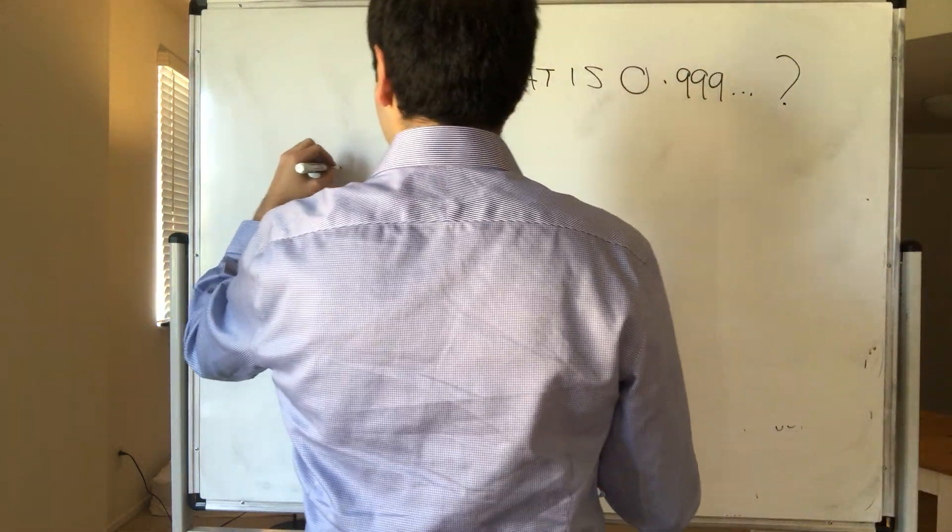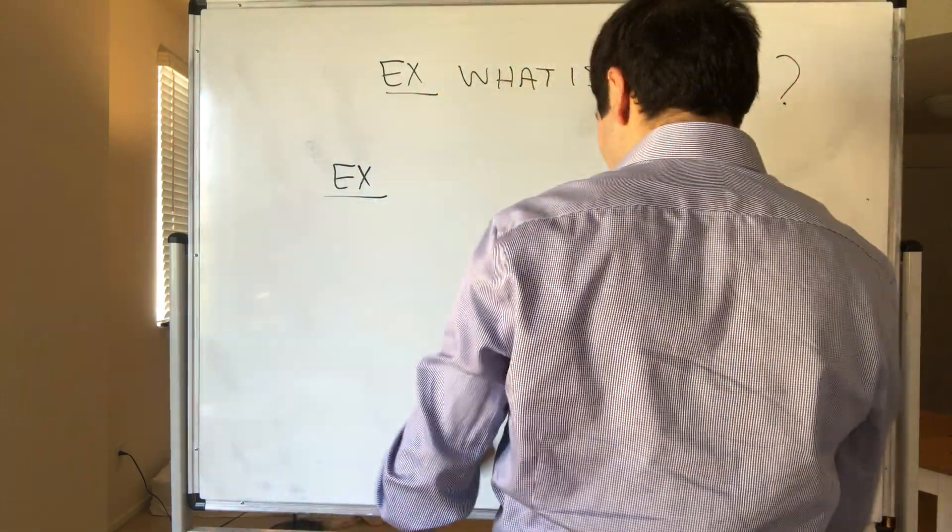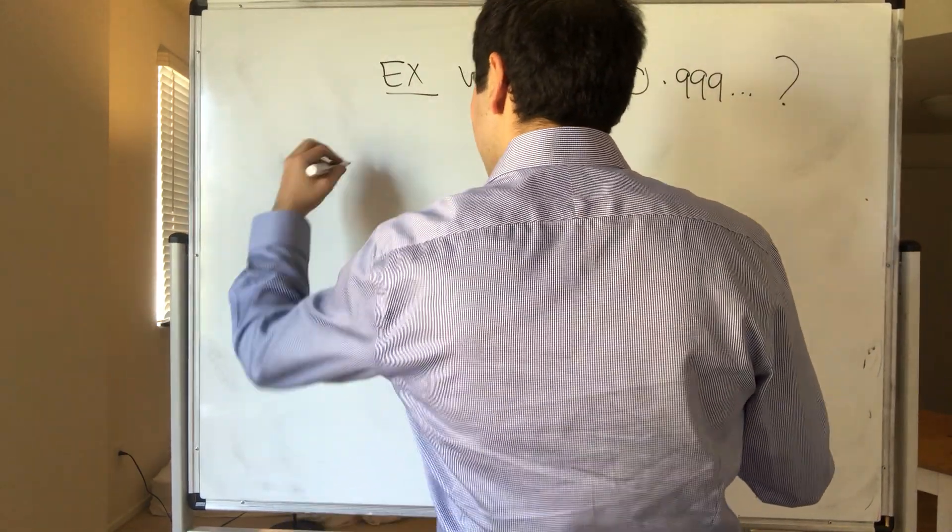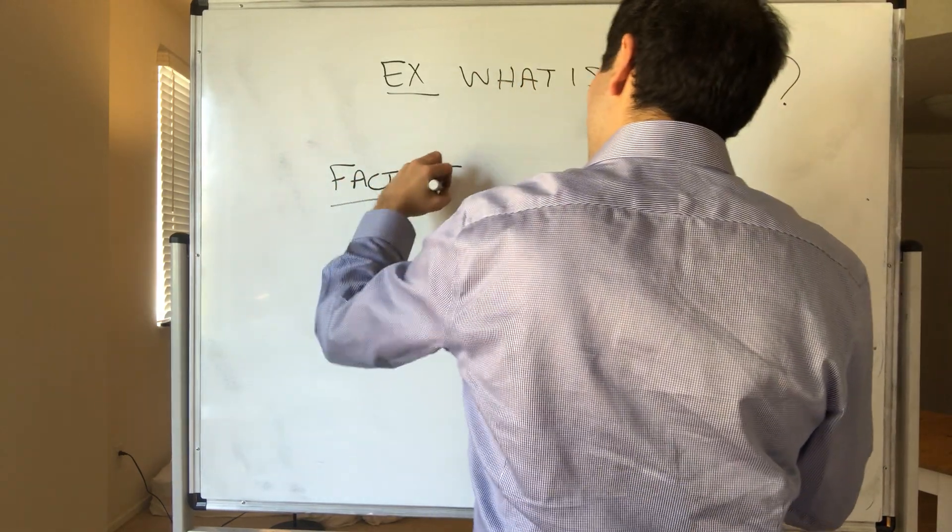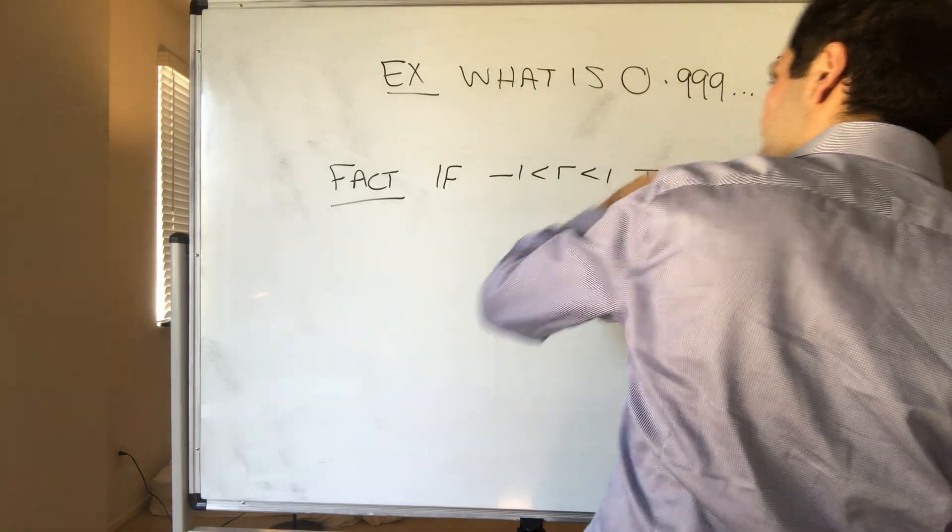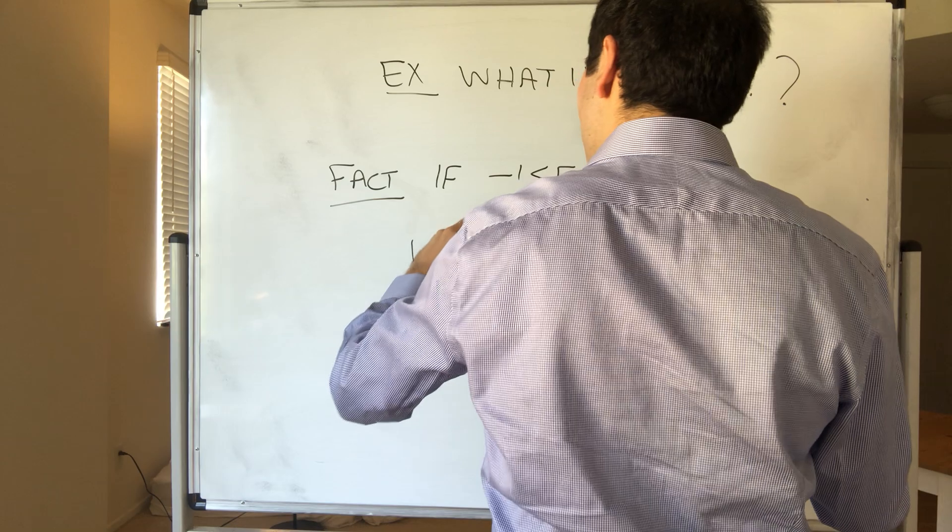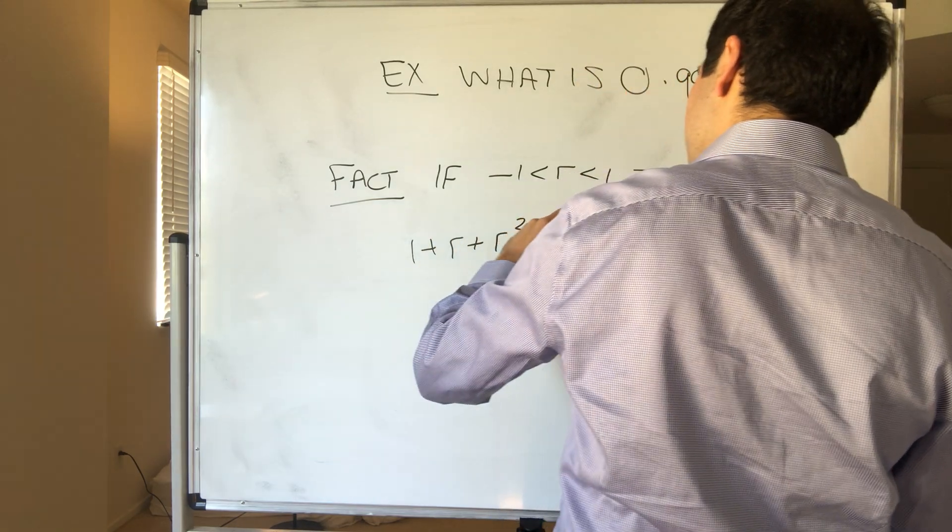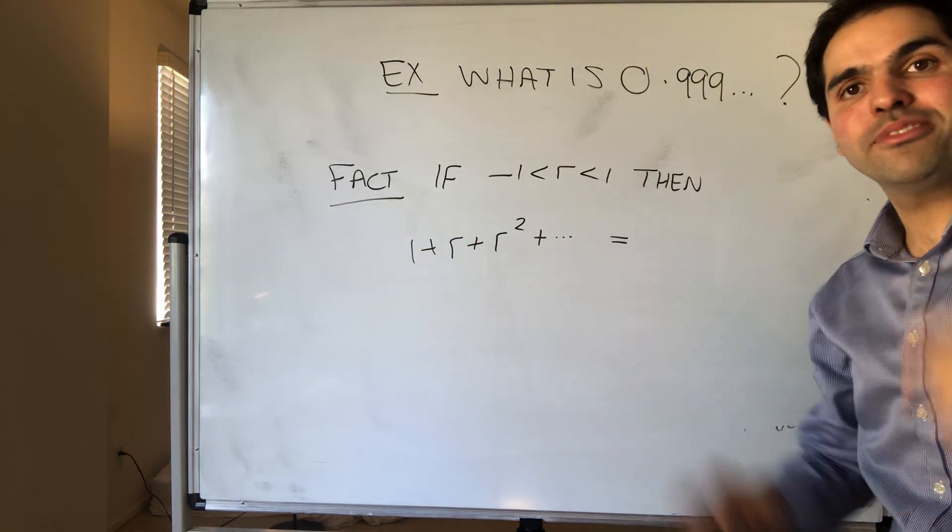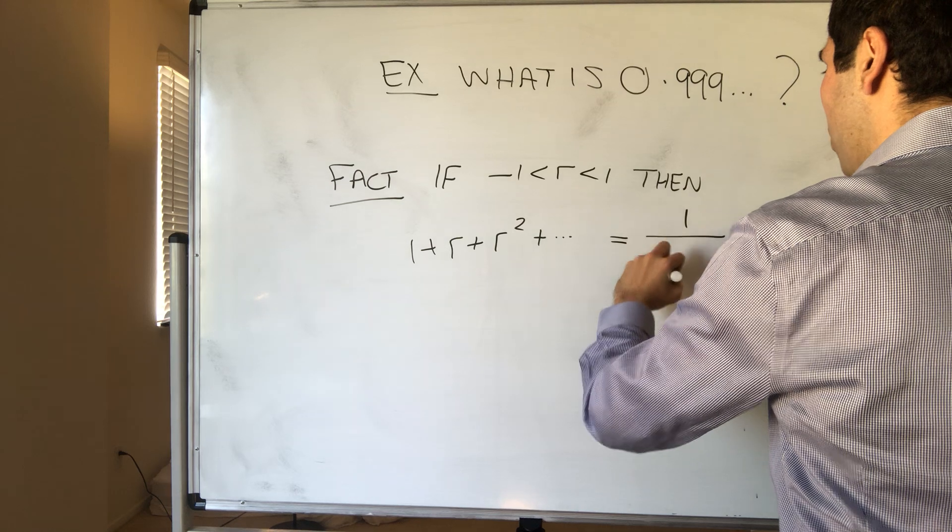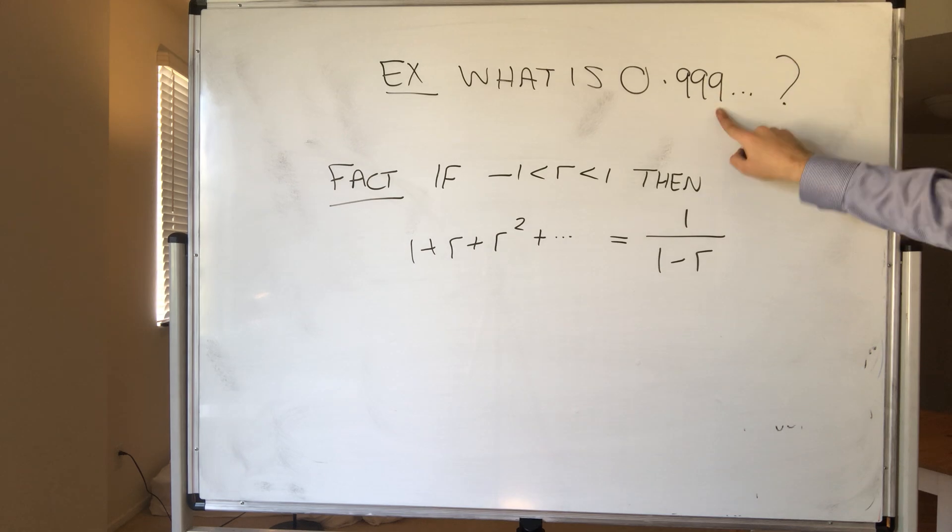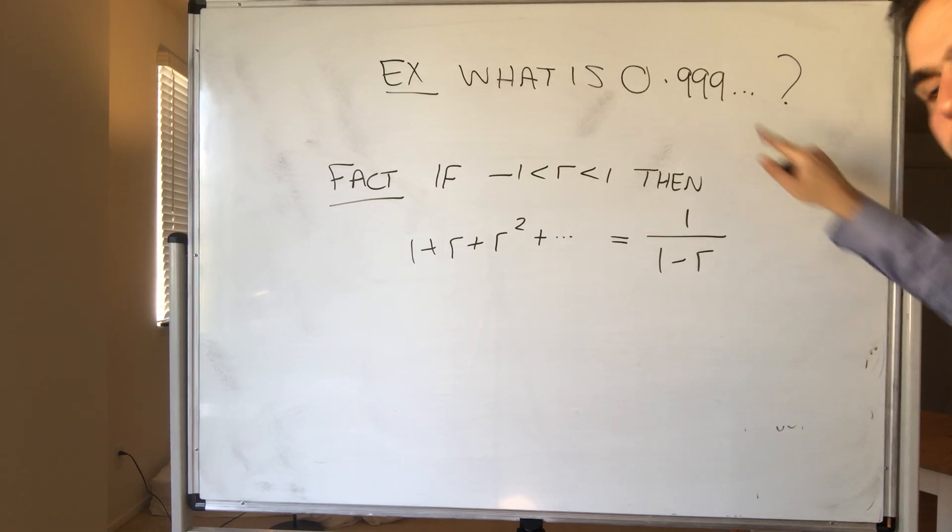What is 0.99999? And for this, we need just a little result from a geometric series, which is in your book, but also you may know it from calculus. So, fact, another example. If r is between minus 1 and 1, then 1 plus r plus r squared plus dot dot dot, so the limit of those partial sums of those sequences is actually 1 over 1 minus r.